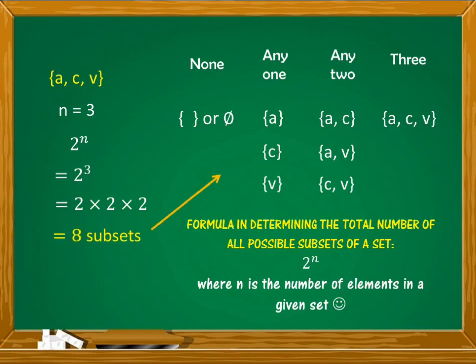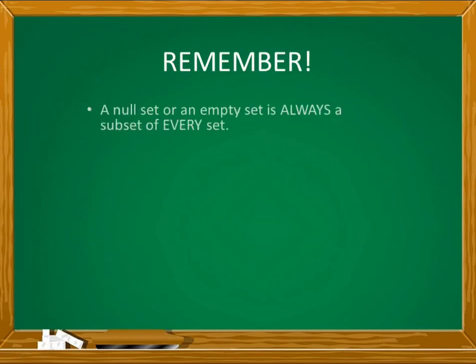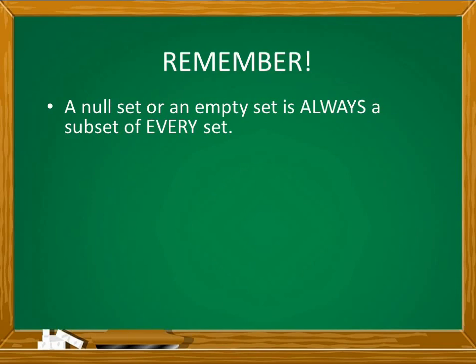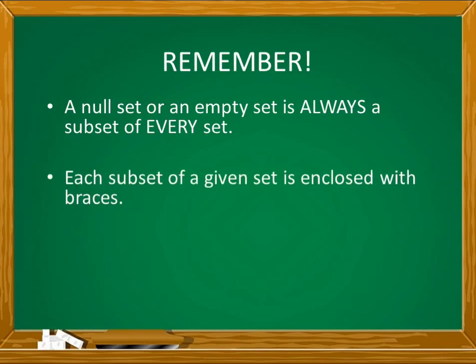There are 8 subsets. Counting the subsets we formed: 1, 2, 3, 4, 5, 6, 7, and 8 — correct! There are 8 subsets when there are 3 elements A, C, and V. Using 2 raised to N as a formula, you can easily find how many subsets can be formed from a given set. Also remember: elements can be reused as long as they are paired with different elements. A null set or empty set is always a subset of every set, so it is always included.